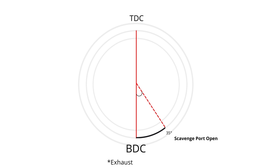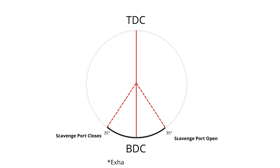The piston crosses and opens the scavenge port at 35 degrees before BDC. The piston travels to BDC and comes up to close the scavenge port at 35 degrees above BDC.